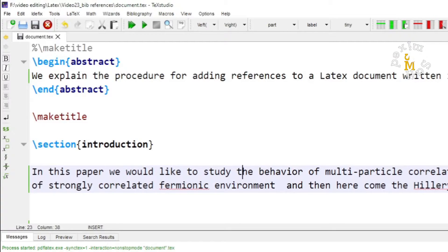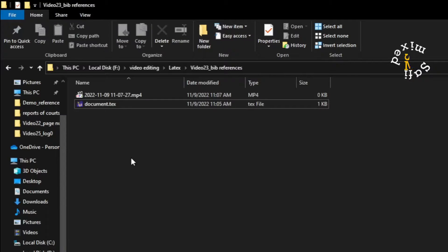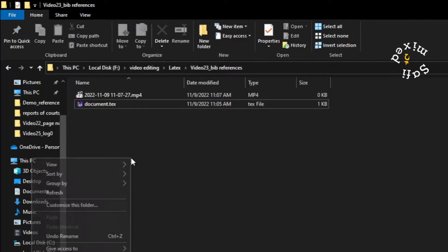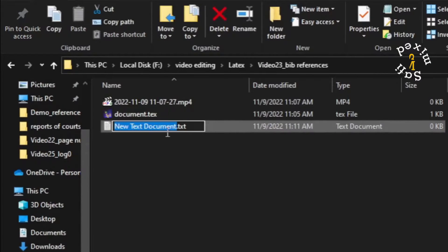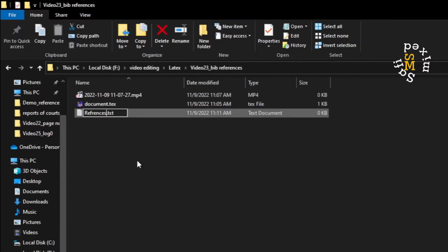So the first thing you need to do is to create a text file with extension bib in the same folder where your document is located. I'm coming here to text document and click on it to create a text document and I want to give it name references and I change the extension of the file to bib.